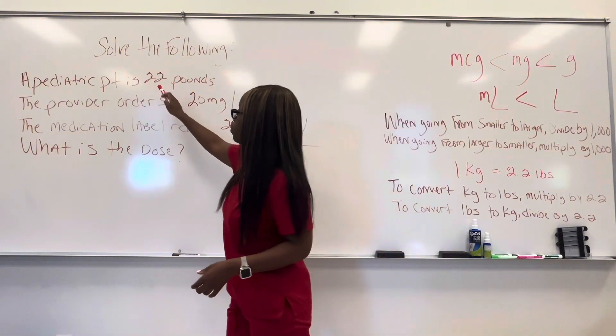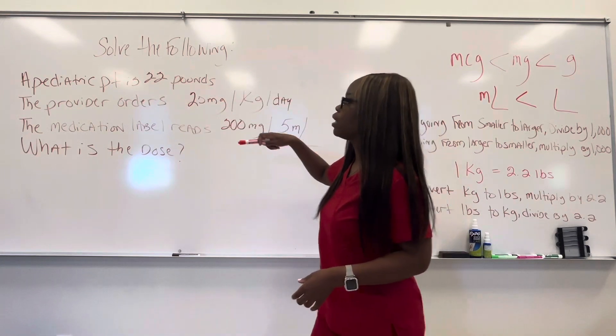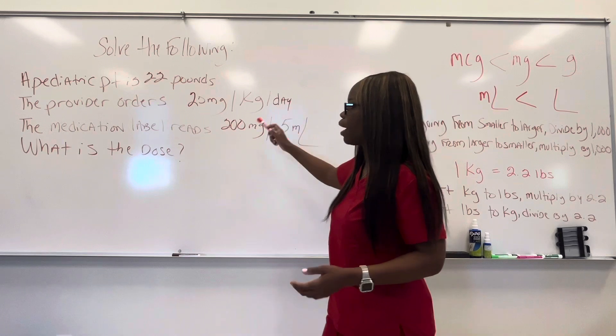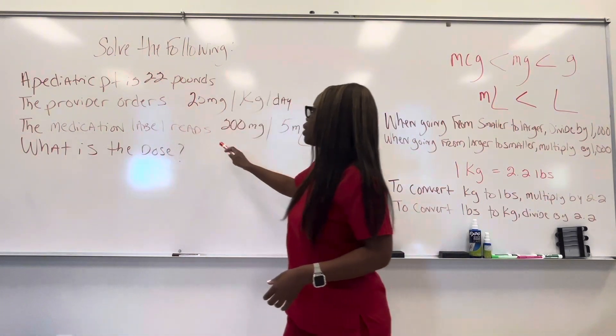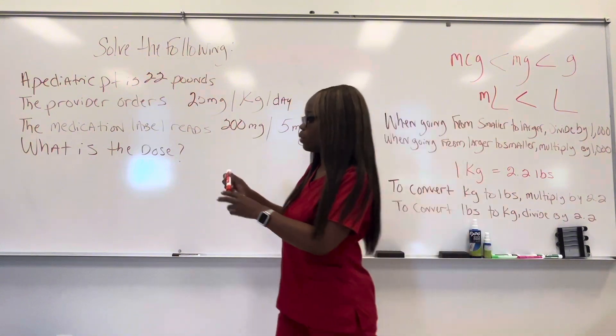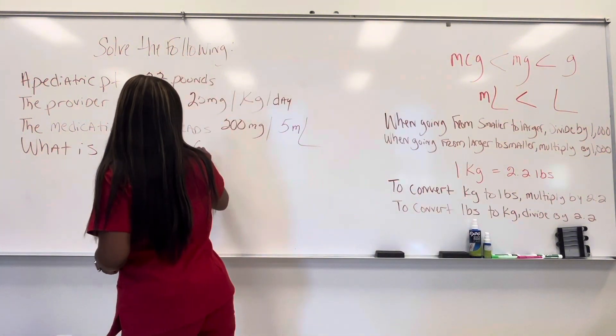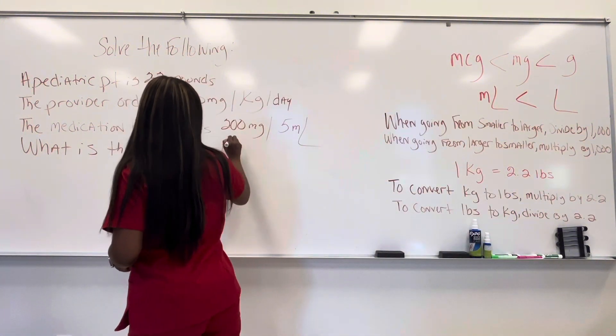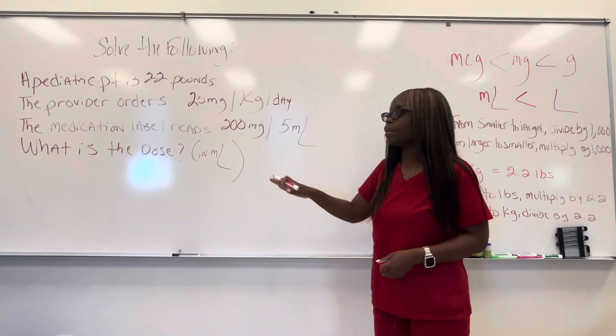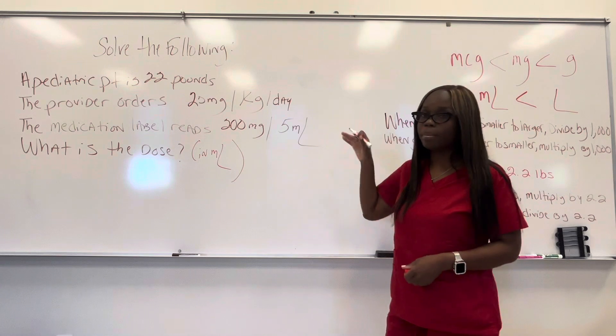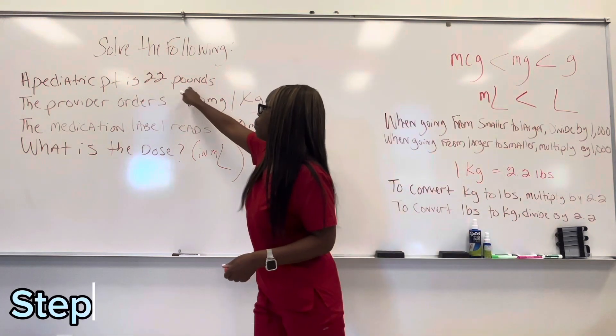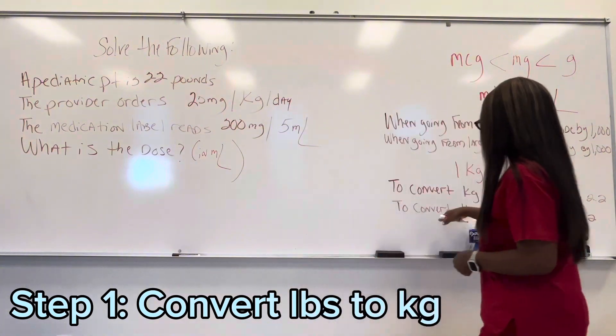Now, let's look at this problem. A pediatric patient is 22 pounds. The provider orders 20 milligrams per kilogram per day of medication. The medication label reads 200 milligrams per five milliliters. What is the dose? And specifically in milliliters. Now, make sure you write down the steps. I'm not going to write down the steps. I'm going to show them to you, but I'm not going to write them out. So make sure you write them down. As we said, the first step is converting pounds to kilograms. And that's going to take us back here.